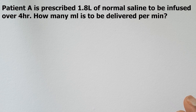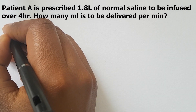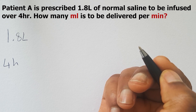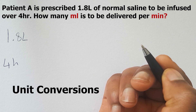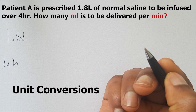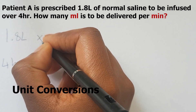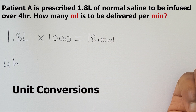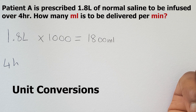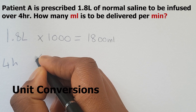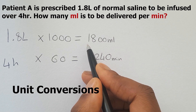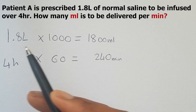The first question: Patient A is prescribed 1.8 litres of normal saline to be infused over 4 hours. How many mils are to be delivered per minute? We start with 1.8 litres over 4 hours and need to convert both units. To go from litres to mils we multiply by 1,000, so 1.8 × 1,000 = 1,800 mils. There are 60 minutes in every hour, so 4 hours × 60 = 240 minutes. So we now have 1,800 mils and 240 minutes.